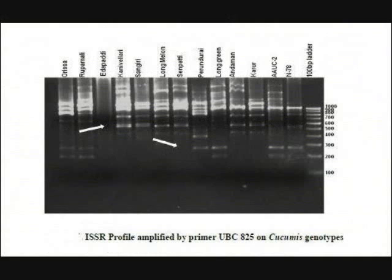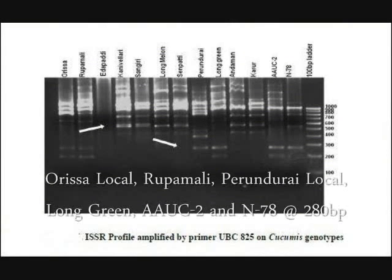The gel diagram of the PCR amplified products using primer UBC825 shows specific bands at 280 base pairs for Orisa Local, Rupamali, Perundure Local, Long Green, AAUC2, and N78.